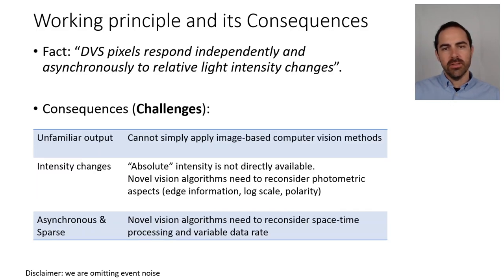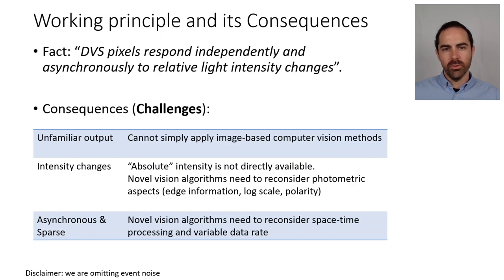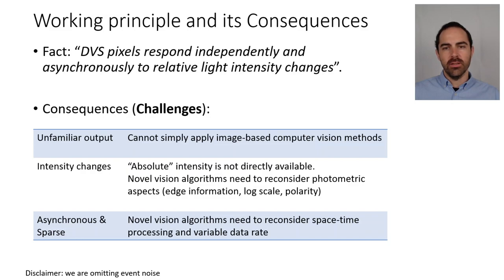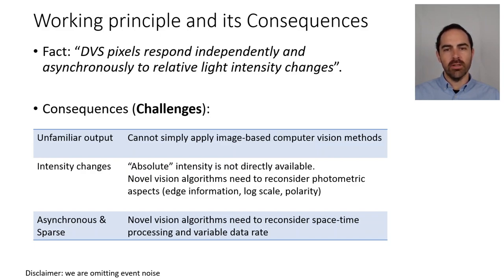What are some of the challenges that these sensors pose? Because they have a very unfamiliar output — the sensor produces a stream of events rather than a sequence of images — we cannot simply apply image-based computer vision methods. The challenge is to design novel vision algorithms. Because we don't have absolute intensity directly available, these novel vision algorithms need to reconsider the photometric aspects. We have only intensity changes, and this happens mostly at edges, so we have to design algorithms taking into account that the information is mostly about moving edges and in logarithmic scale.